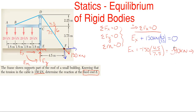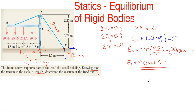A negative sign doesn't mean the reaction value is wrong — it just means you assumed the wrong direction. So drop the minus sign and flip the arrow. Instead of 90 kilonewtons to the right, it's actually 90 kilonewtons to the left. That's E sub x — one reaction down, found using the x equilibrium equation.